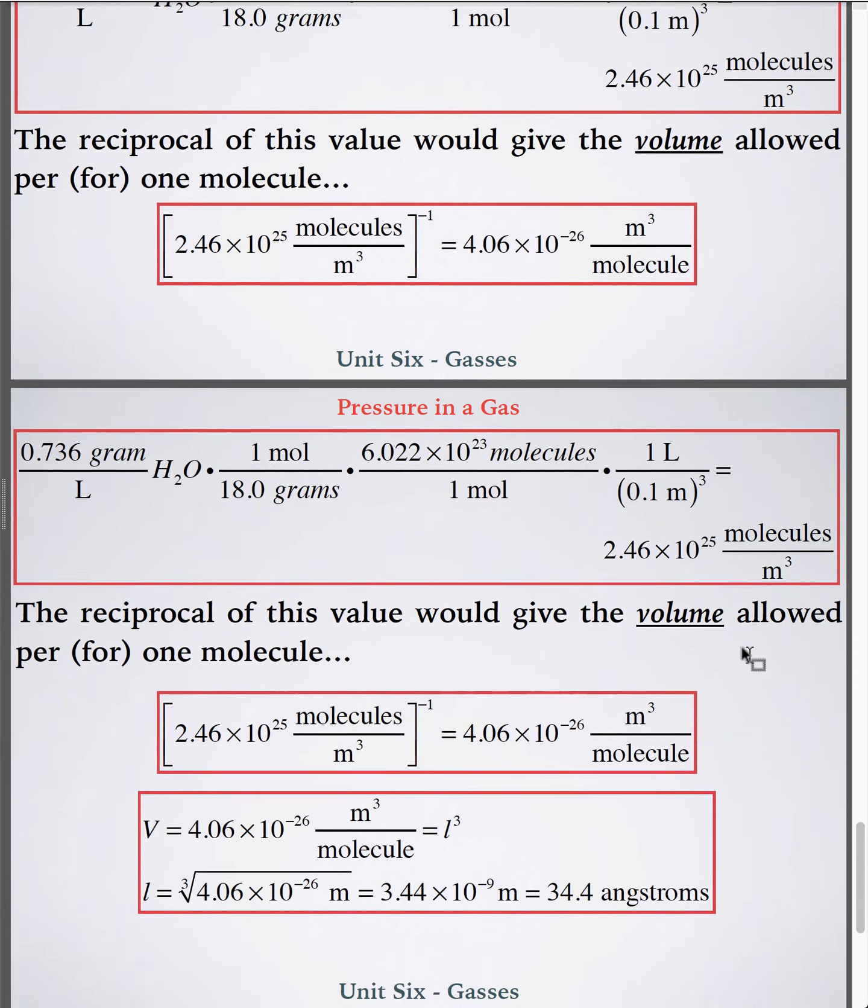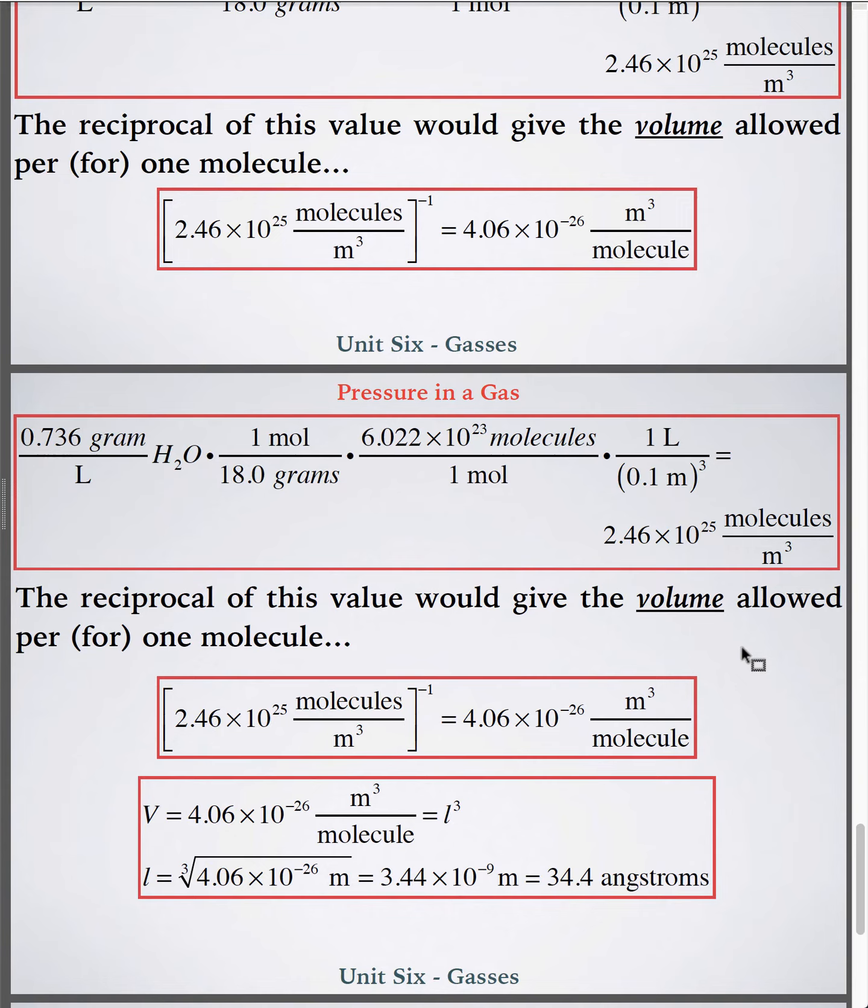Then, what did I do next? Oh, yeah, I just brought that down and then assumed also that, just like I did above, that the length and length and length of that volume are approximately the same if it's a cubic region. And then, take the cube root of both sides to find 34 angstroms-ish available for one water molecule.